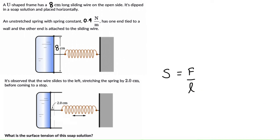But this is actually a soap solution, and a soap solution has two surfaces, one and two. So the total force that is acting to the left on this sliding wire is actually 2F, not just F. So if we write F equals SL, the total force acting to the left is really 2F or 2SL.